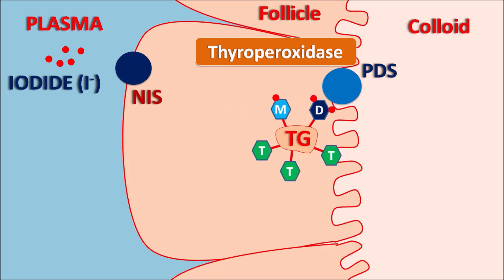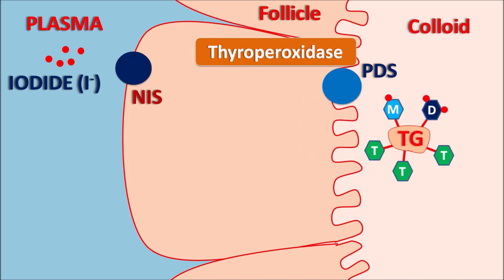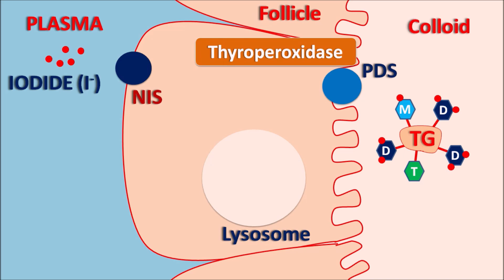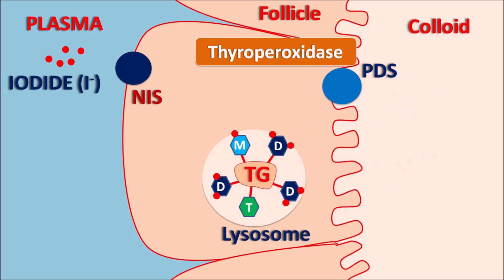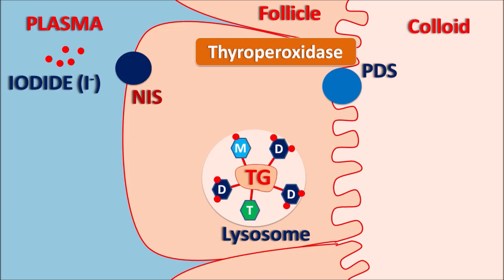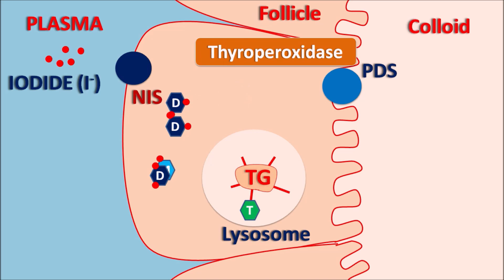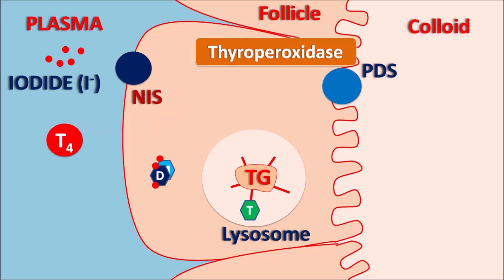Thyroglobulin is secreted into the thyroid follicle along with the mono-iodinated and di-iodinated tyrosine residues. Within the follicle, lysosomes dissolve the thyroglobulin to release free iodinated tyrosine residues. Thyroglobulin undergoes endocytosis and is cleaved in lysosomes. When two molecules of di-iodinated tyrosine are joined, they produce T4, which is secreted into the plasma. When a mono-iodinated and a di-iodinated tyrosine residue combine, they produce T3, which is also secreted into the plasma.